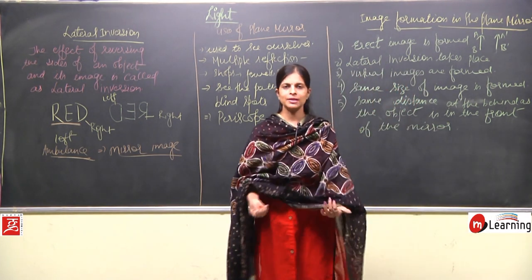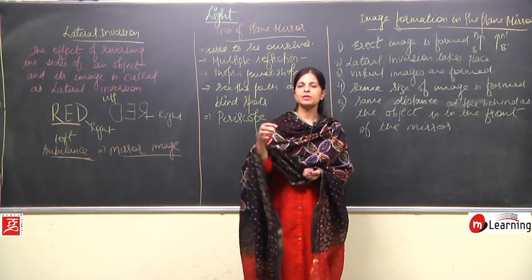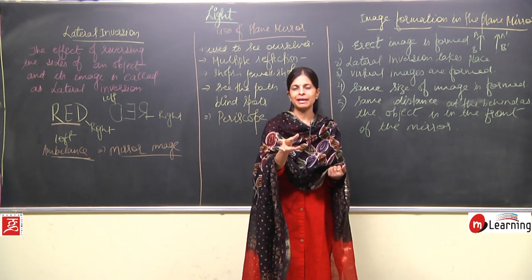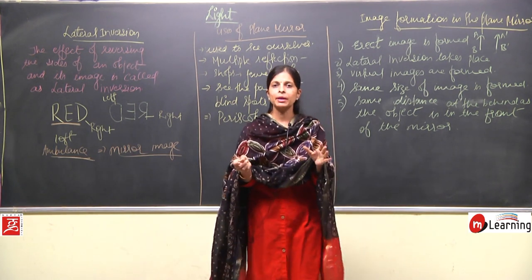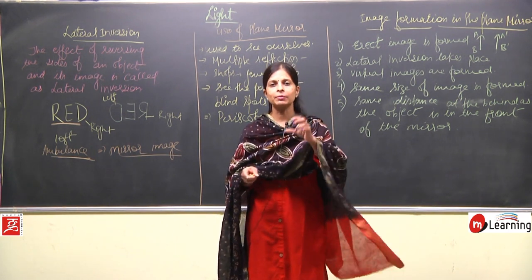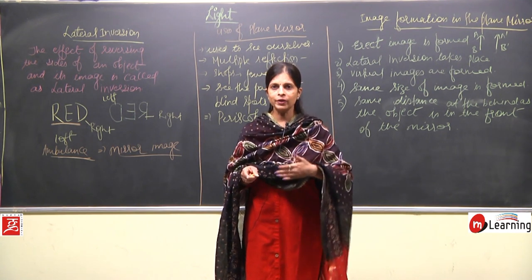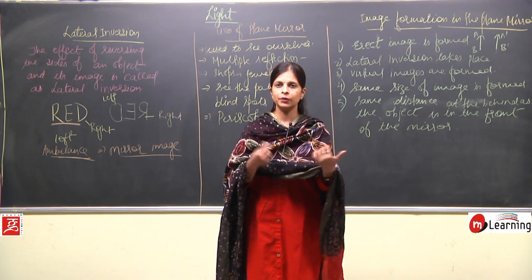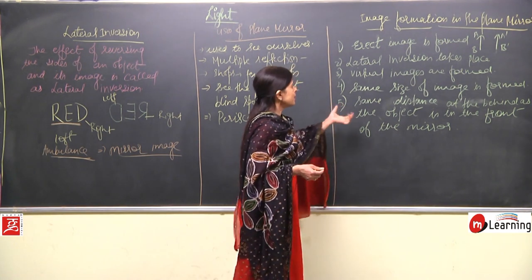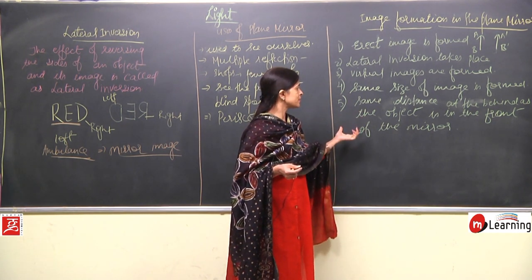For example, if you are standing in front of the mirror and move back, the image will also appear to move back by the same distance. You can understand this better by placing a chessboard with chess coins in front of a mirror and observing how the image moves as you shift the pieces. The same distance in front equals the same distance behind the mirror.